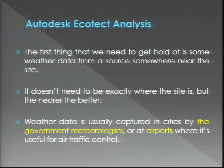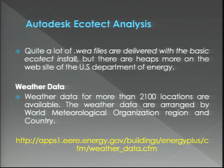For Ecotect, the weather station doesn't need to be exactly on your site — it can be within 2, 10, or 20 kilometers, because it's very difficult to get weather data for every specific site. Ecotect uses a file with the extension .WEA. When you download Ecotect, you will find many weather files already included for different countries.